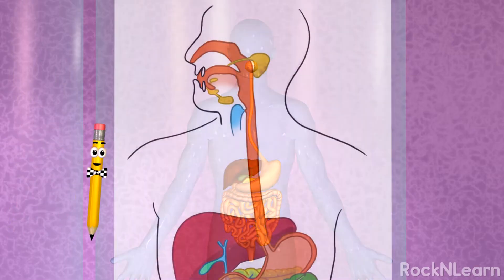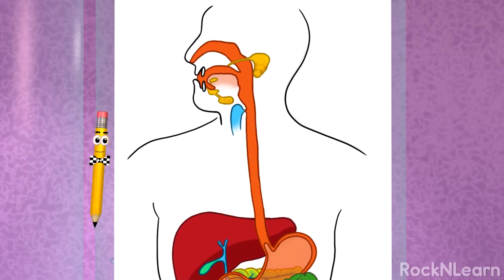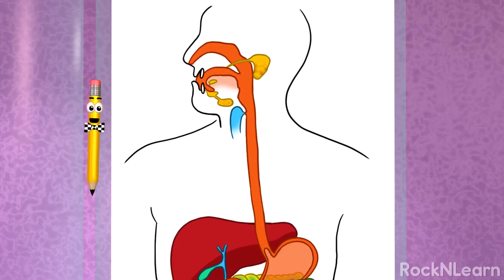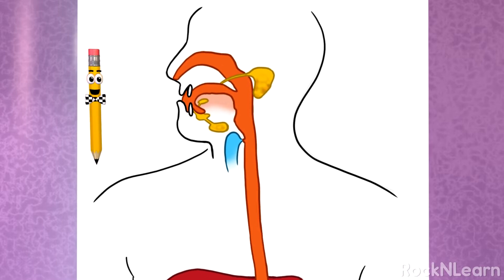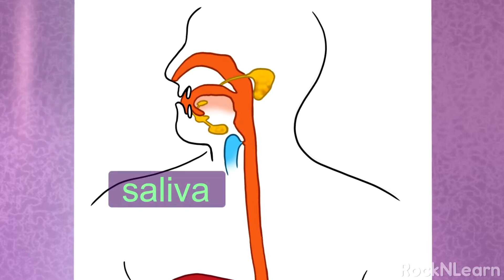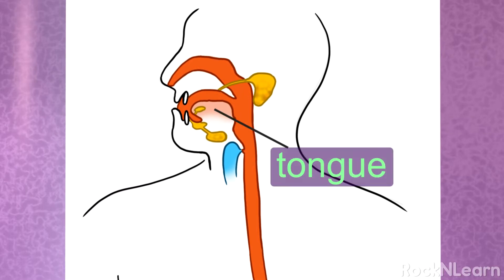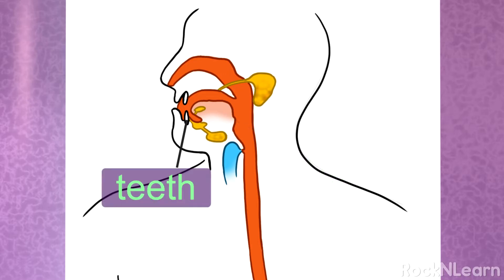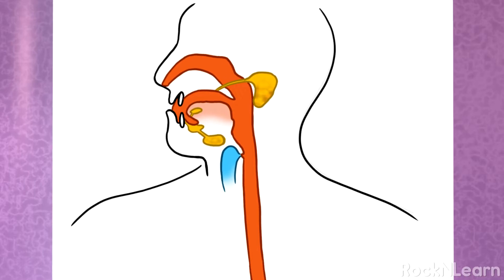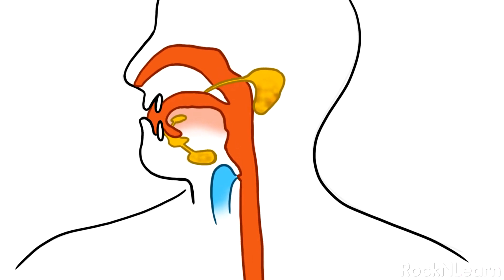Your body actually gets ready for digestion before you eat. Just seeing or smelling food creates saliva or spit in your mouth. When you eat food, the saliva breaks down the chemicals in the food a little. Your tongue helps out too, pushing the food around while you chew with your teeth. When you're ready to swallow, the tongue pushes the mushed up food toward the back of your throat and into the opening of your esophagus, the second part of the digestive tract.